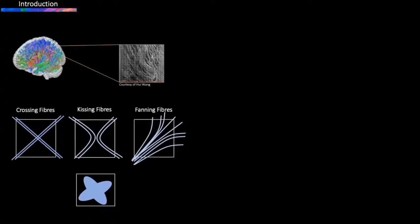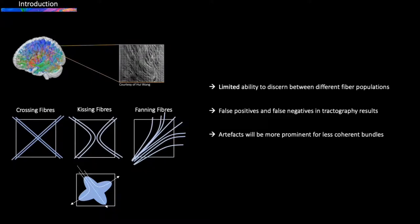The intrinsic low spatial resolution of commonly achievable diffusion MRI acquisitions means that in each voxel, different fiber configurations will be represented by similar diffusion profiles. Tractography won't be able to distinguish between them, leading to both false positive and false negative reconstructions. This is particularly true for less coherent white matter bundles that include more complex fiber configurations.